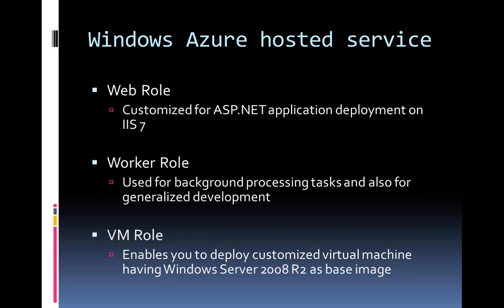Applications you typically create can be categorized into two types. One set requires interaction or a request coming in from an end user or another application — such as web services or web applications which require invocation and will not run on their own. Best examples are ASP.NET applications, WCF services, and web services. These kinds of applications when deployed on Azure are hosted as a web role.